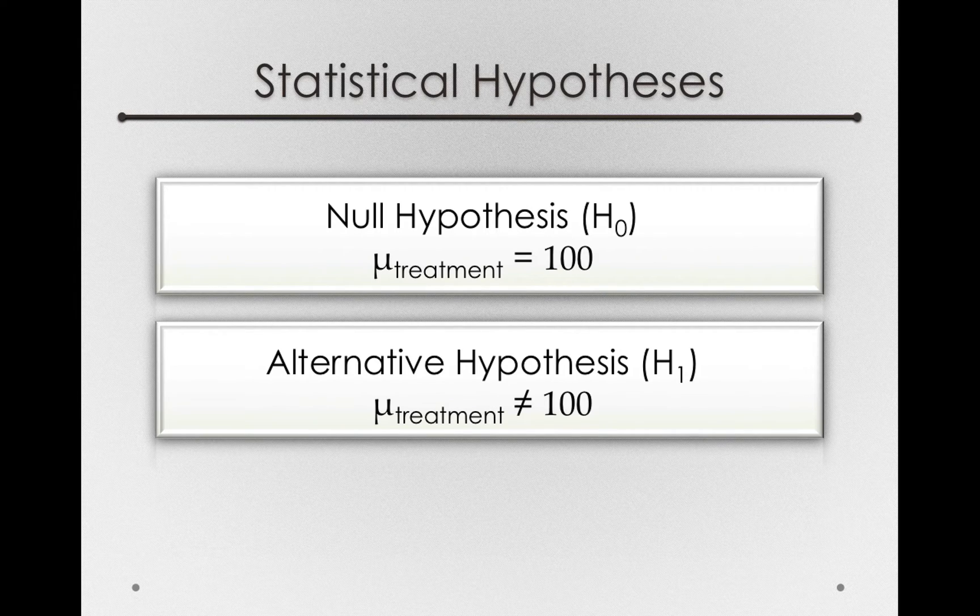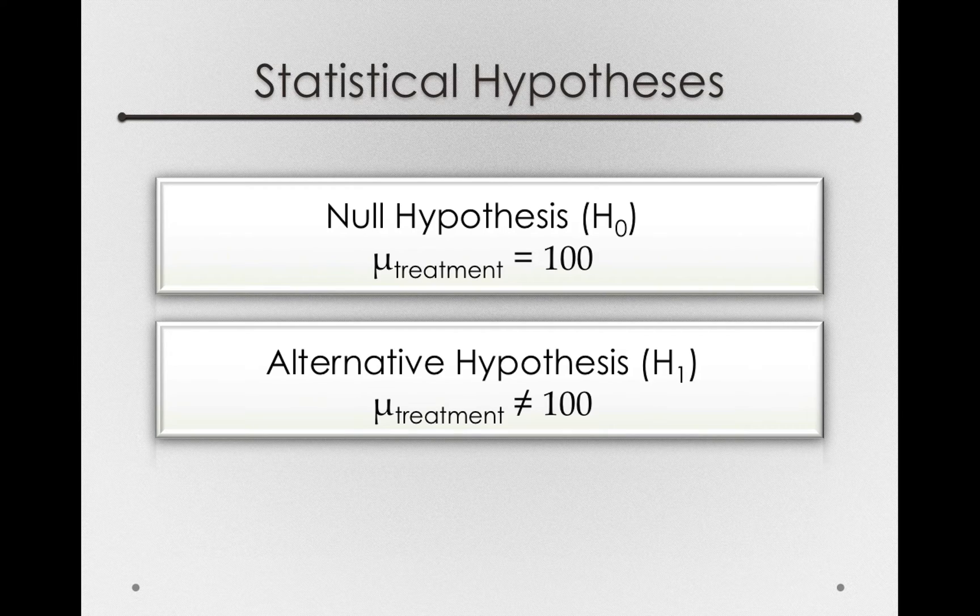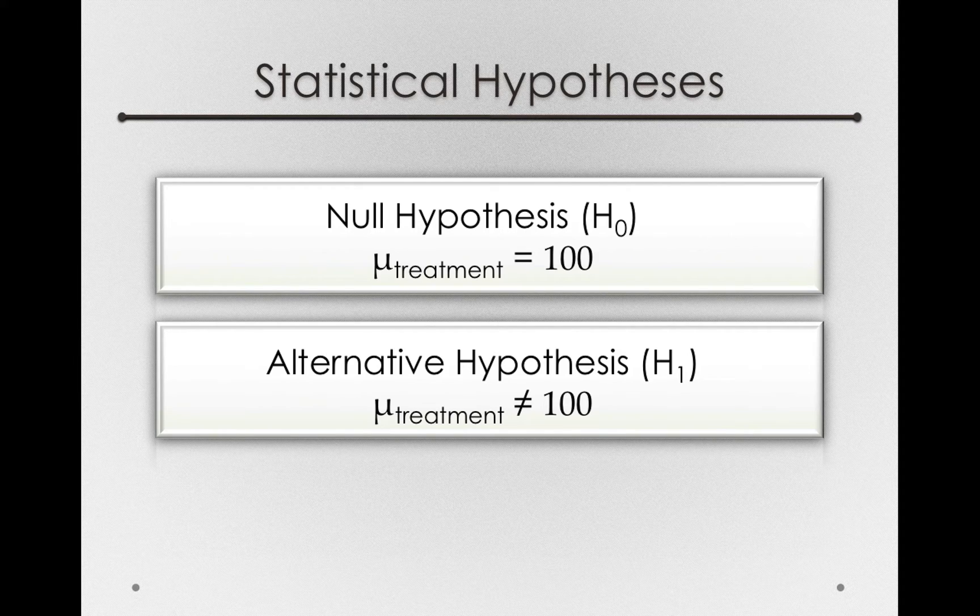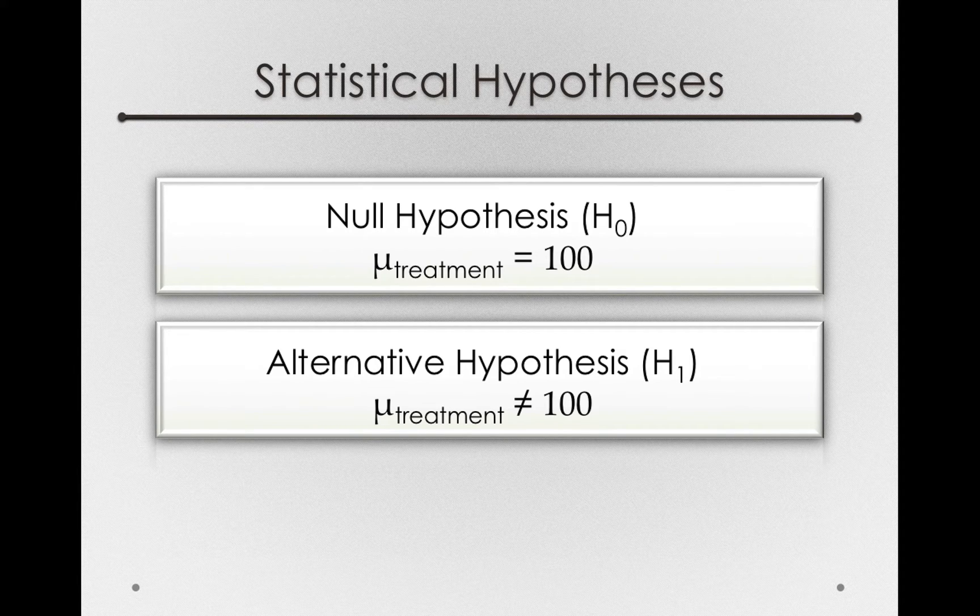Now notice, it might seem reasonable to take the alternative hypothesis and make predictions from that. But it will be very hard to discredit the alternative hypothesis, that the mean after treatment is not equal to 100. In science, we try to falsify theories and falsify hypotheses. That's the only way we can make good inferences.